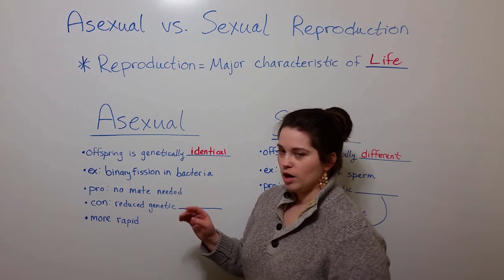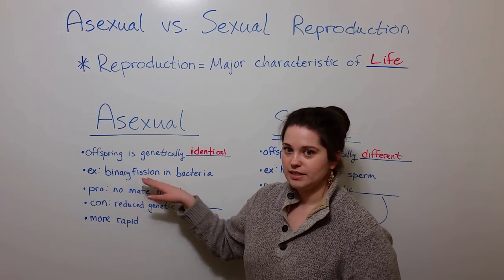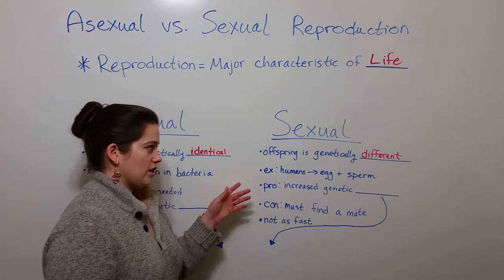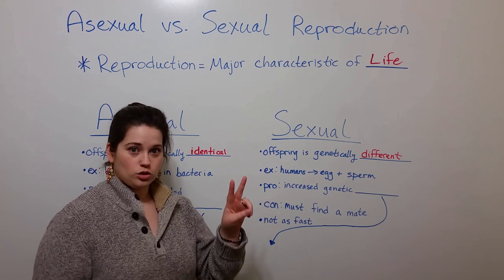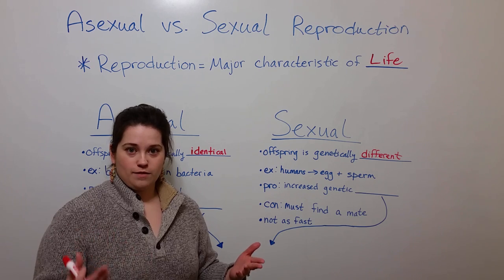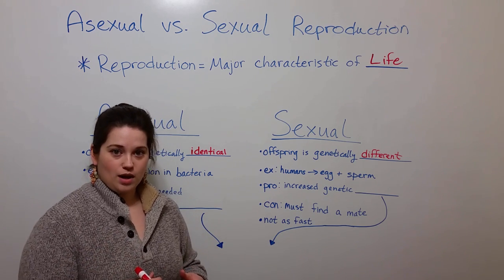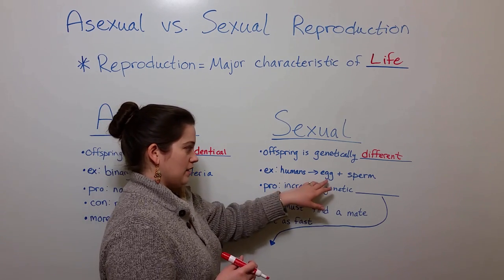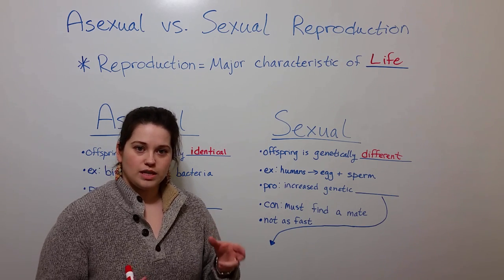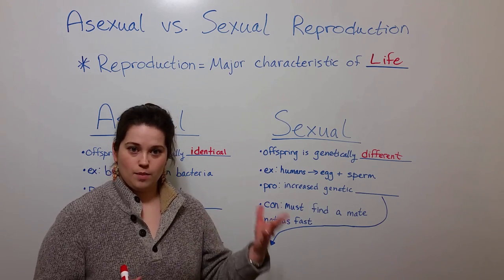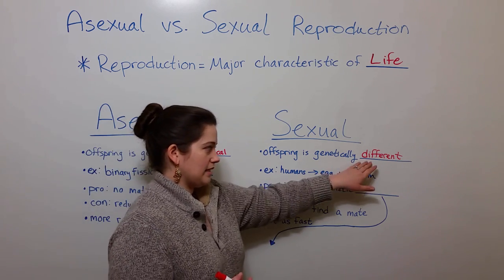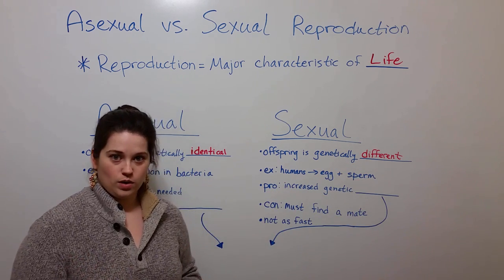If you're interested in learning more about the process of binary fission, see my video on that topic. In sexual reproduction, the offspring are genetically different because there are two parents. You have gametes from a male and gametes from a female that come together in the process of fertilization. For example, in humans, this is when the female's egg is fertilized by male sperm, and so the resulting offspring gets half of their DNA from the mother and half of their DNA from the father, making them genetically different from either parent.